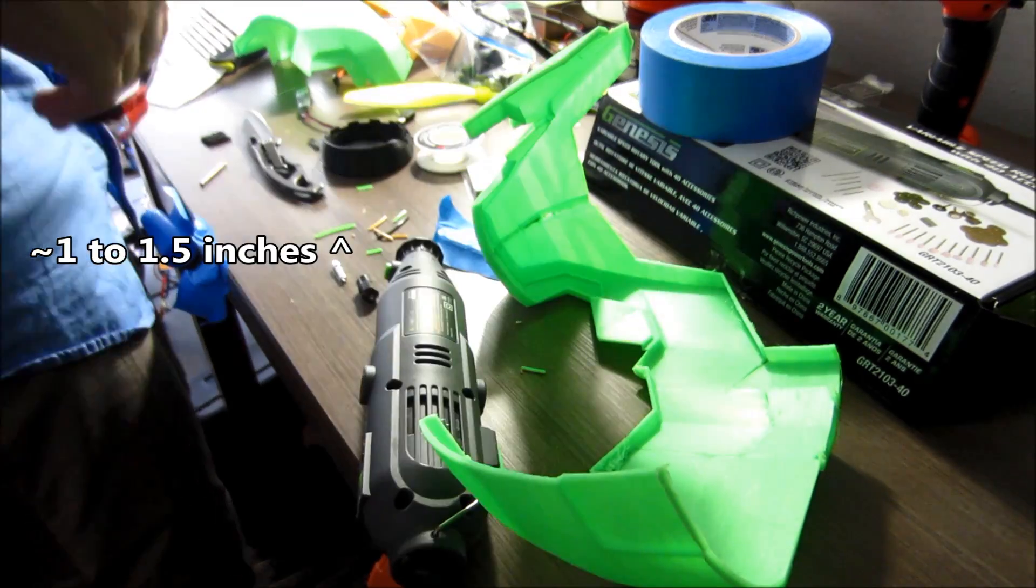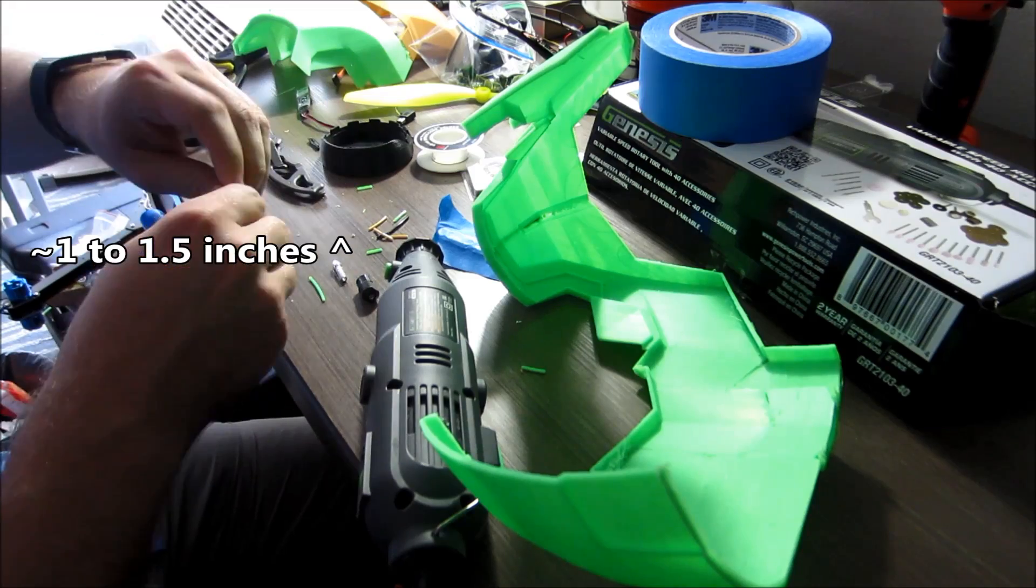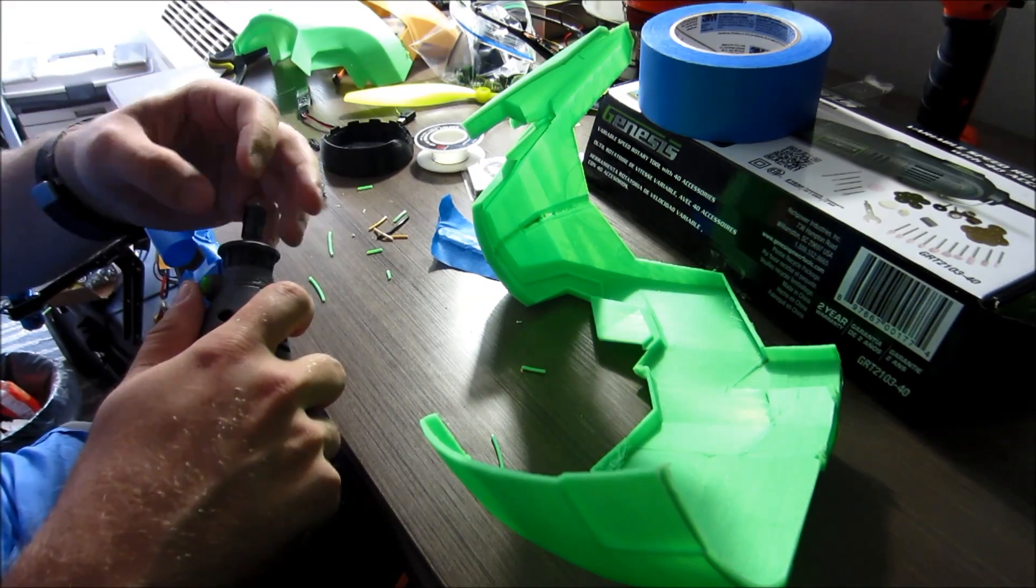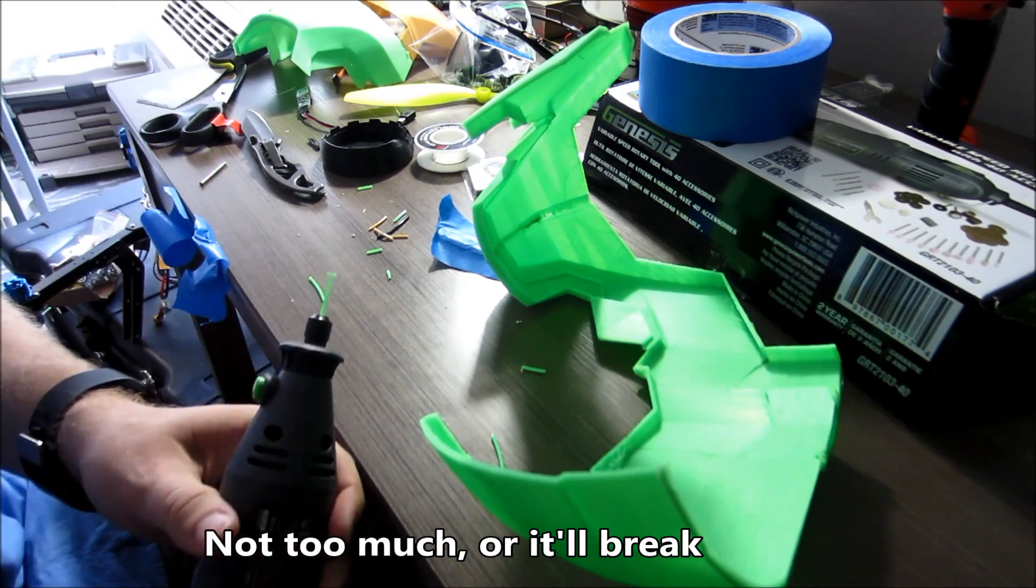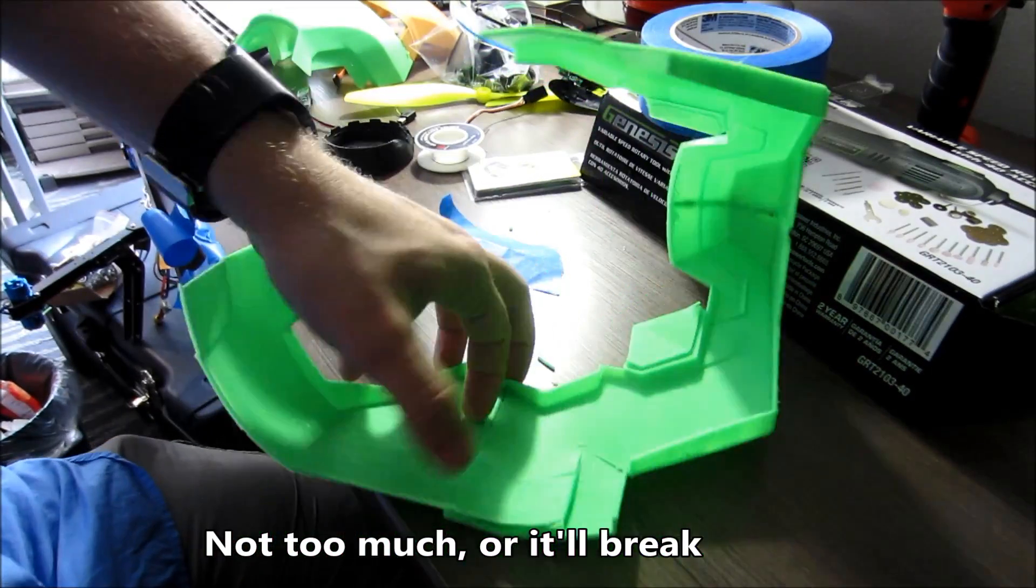So what is friction welding, you might ask? Simply put, you put a little piece of filament in a Dremel, spin it up, and feed it into a crack in your printed part. It's kind of like actual stick welding, but with plastic.